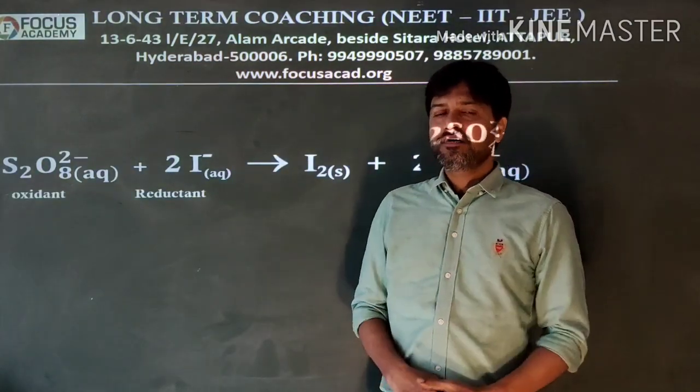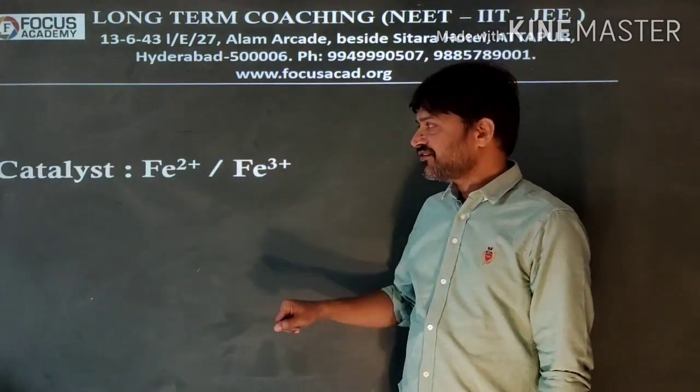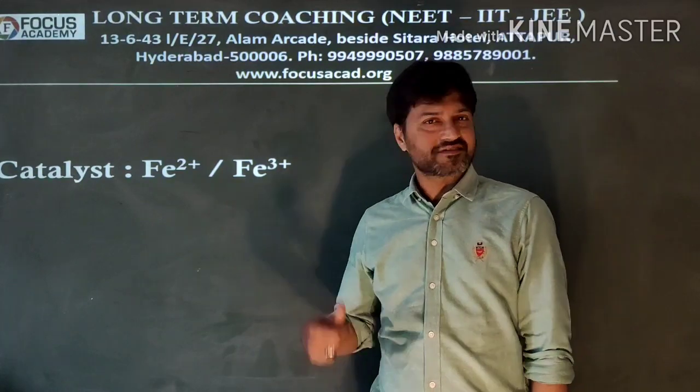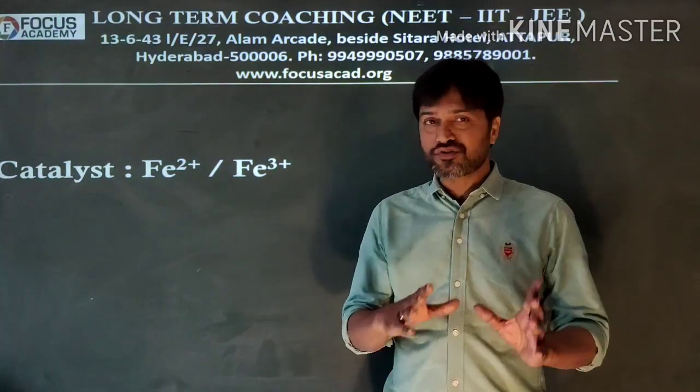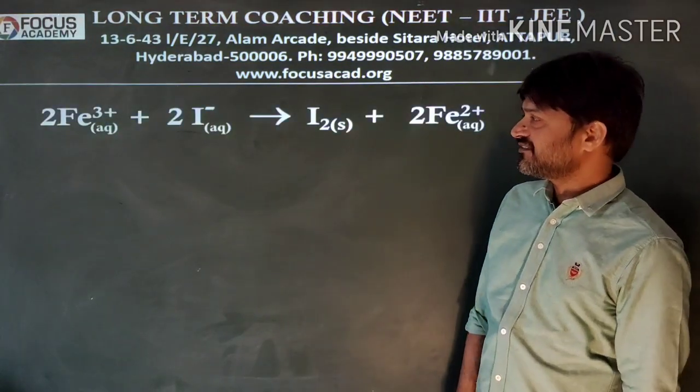In order to speed up this reaction we need a catalyst. Look at the catalyst. Try to realize that the catalyst we are using is carrying positive charge. Our oxidant and reductant both are negatively charged. Look at the mechanism how ferrous or ferric will be helpful in this reaction.